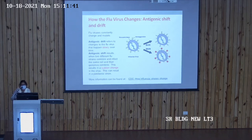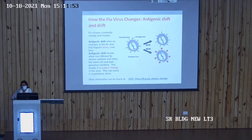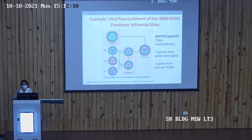Antigenic shift results when two different flu strains combine and infect the same cell, resulting in a sudden change in the virus that can lead to the appearance of a pandemic strain. For example, the 2009 H1N1 pandemic influenza virus involved triple reassortment — seven genes from avian and swine viruses and one from human.